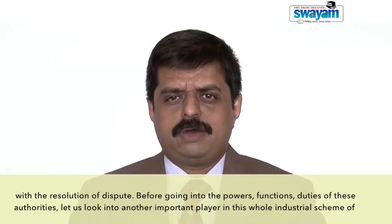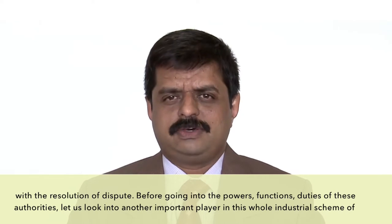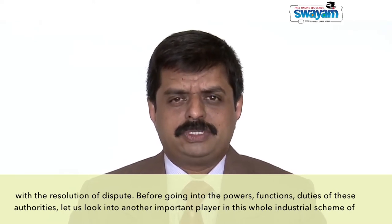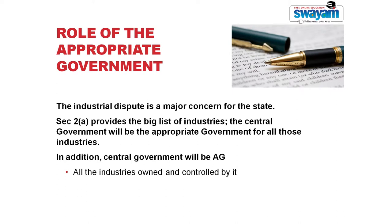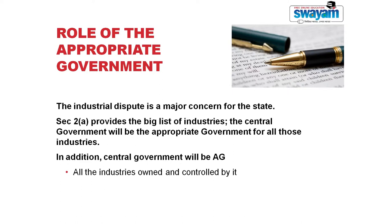Before going into the powers, functions, and duties of these authorities, let us look into another important player in this whole industrial scheme of the Industrial Disputes Act — and that player is the appropriate government. Section 2a defines appropriate government. Either it can be the central government or the state government which can be an appropriate government.